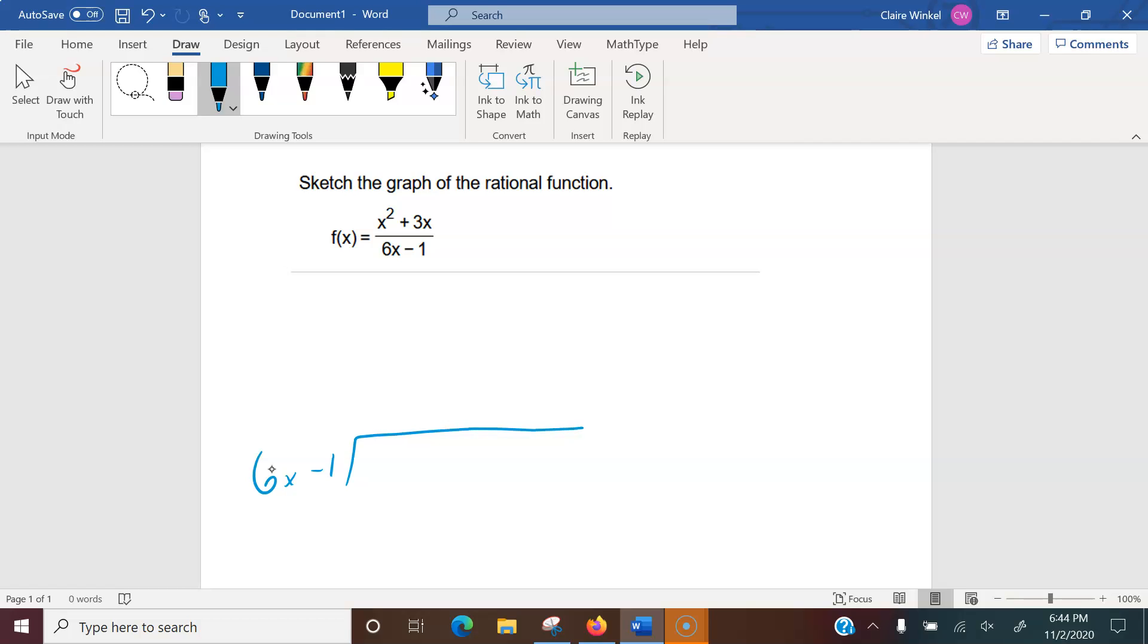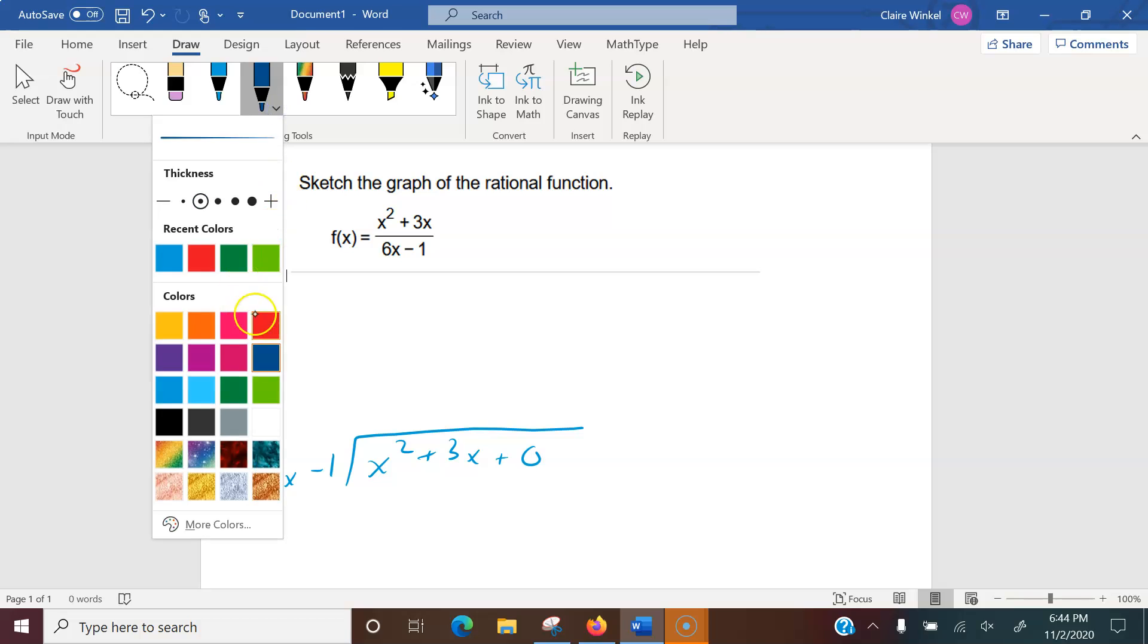So I've got 6x minus 1 is going to go into x squared plus 3x plus 0. Now as you pointed out, this is a little bit trickier because we have the 6 in front and just a 1 here, so it's not really the same as what we had done before because we're going to be dealing with fractions.